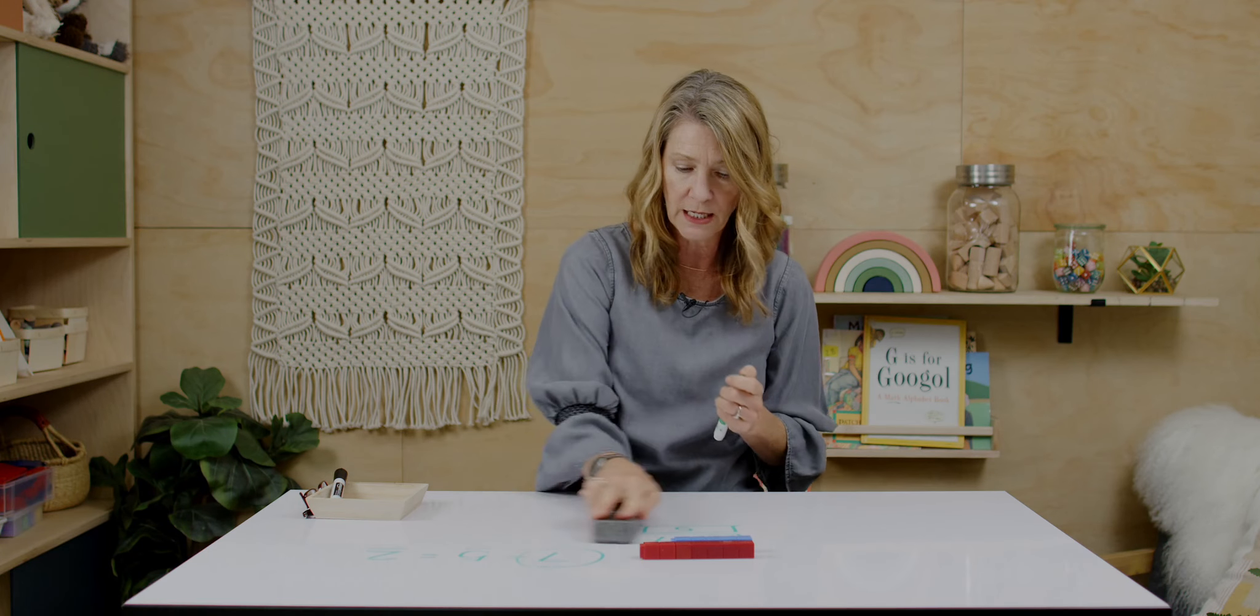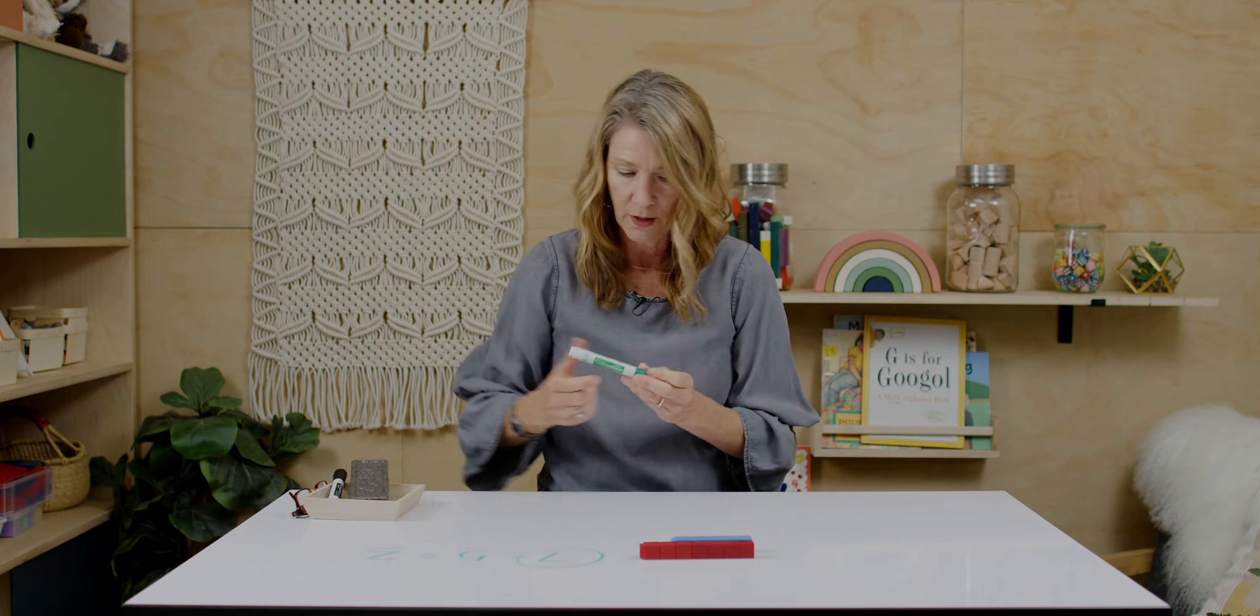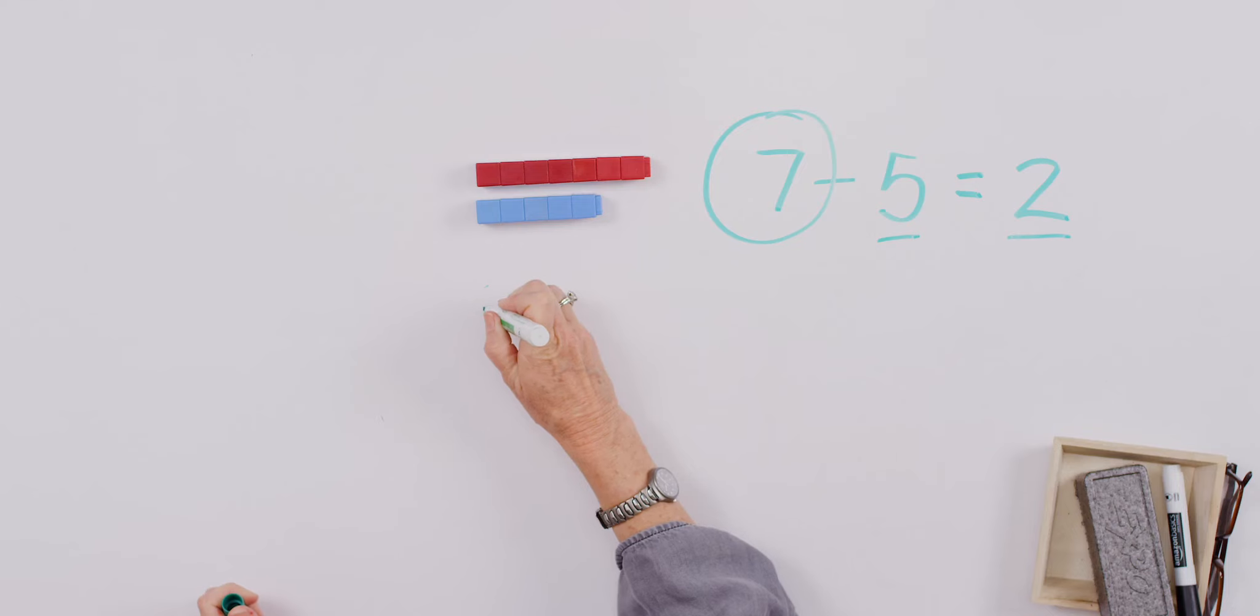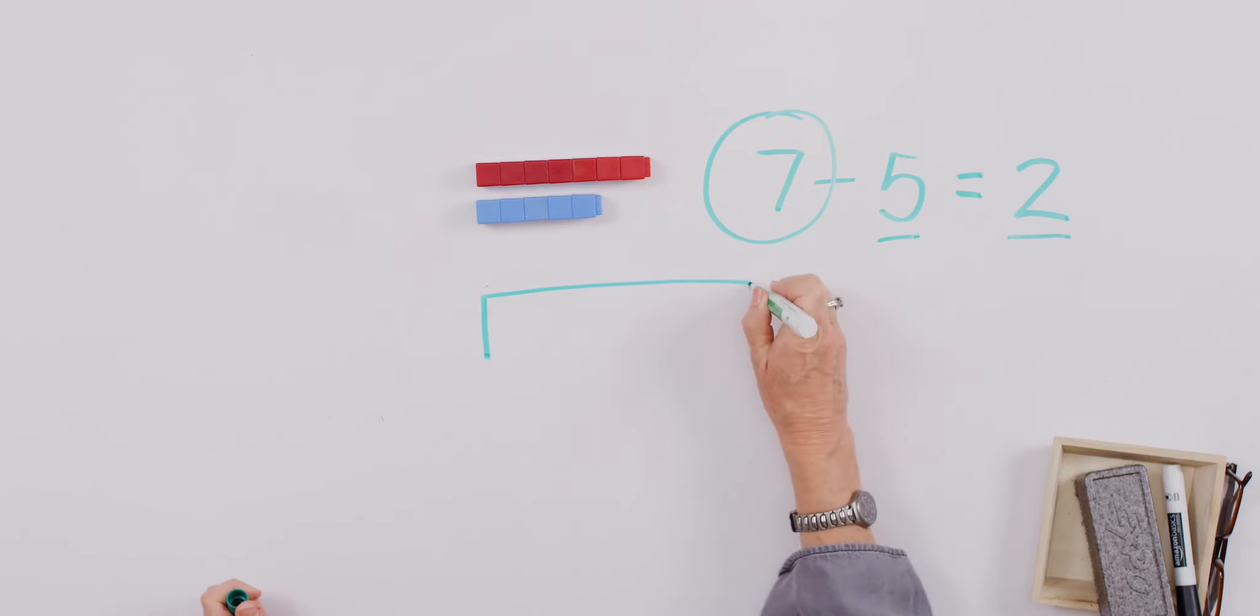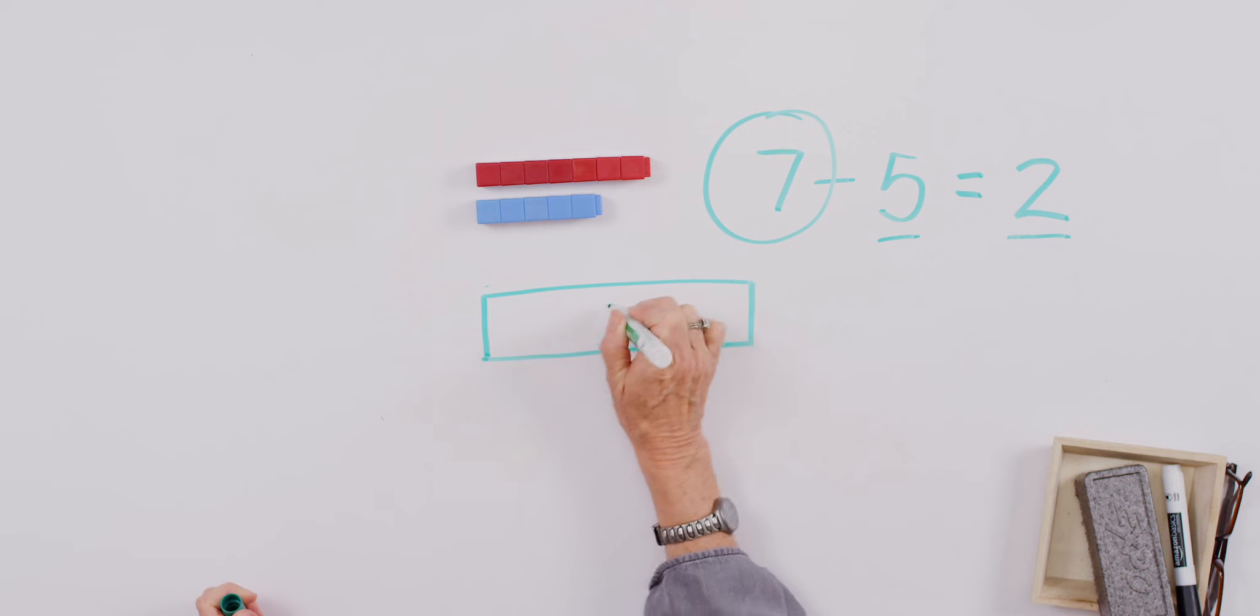Sometimes you might see the bars really more connected. So pretty much the same thing. Just that you might see it like this. Kind of like a number bond bar. And we've got our five here. And then so I know what goes here is two.